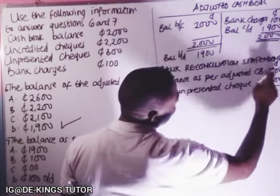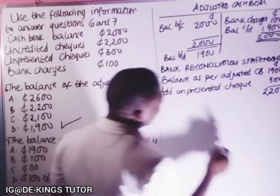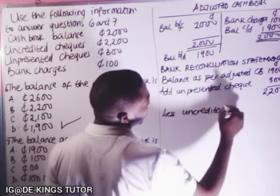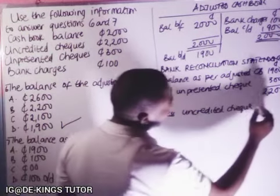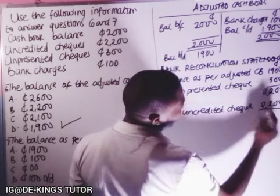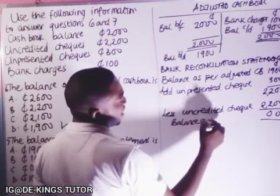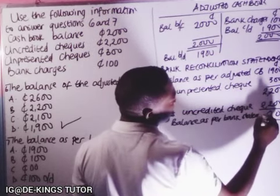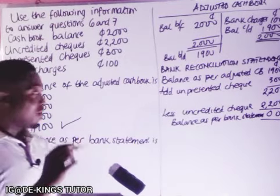We add the unpresented cheque of 300 cedis, giving us 2,200. Then we deduct the uncredited cheque of 2,200 cedis — wait, the uncredited cheque here is 200 cedis — so 2,200 minus 200 leaves us with zero. Therefore the balance as per bank statement is zero cedis. The answer to question seven is C: zero.